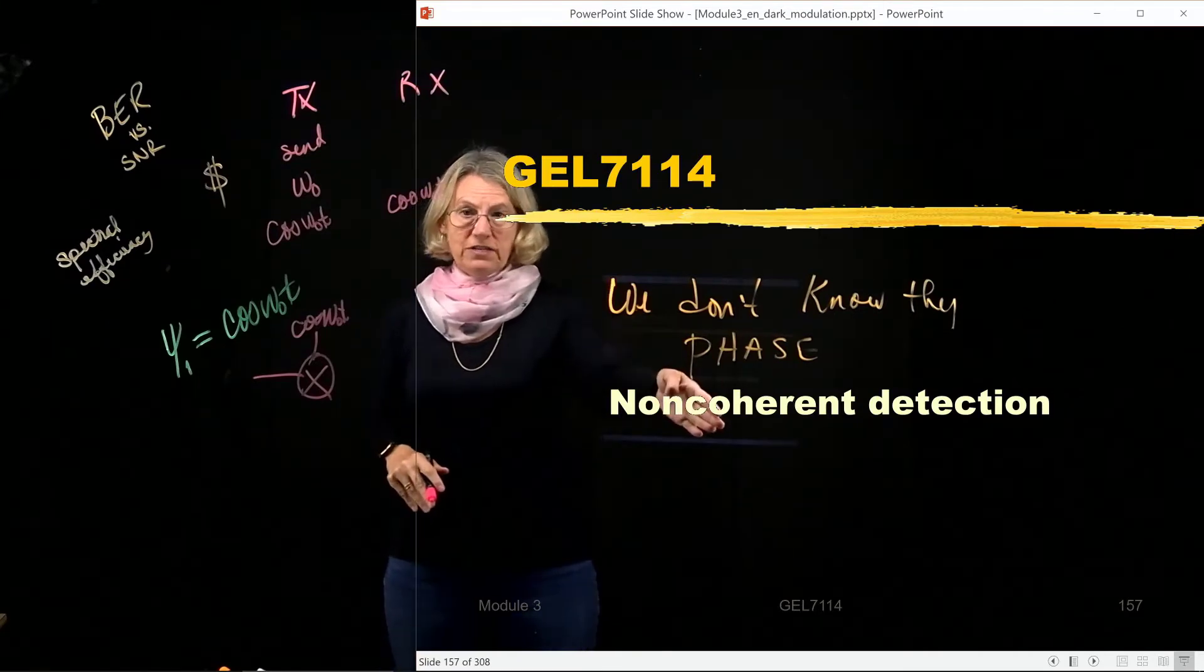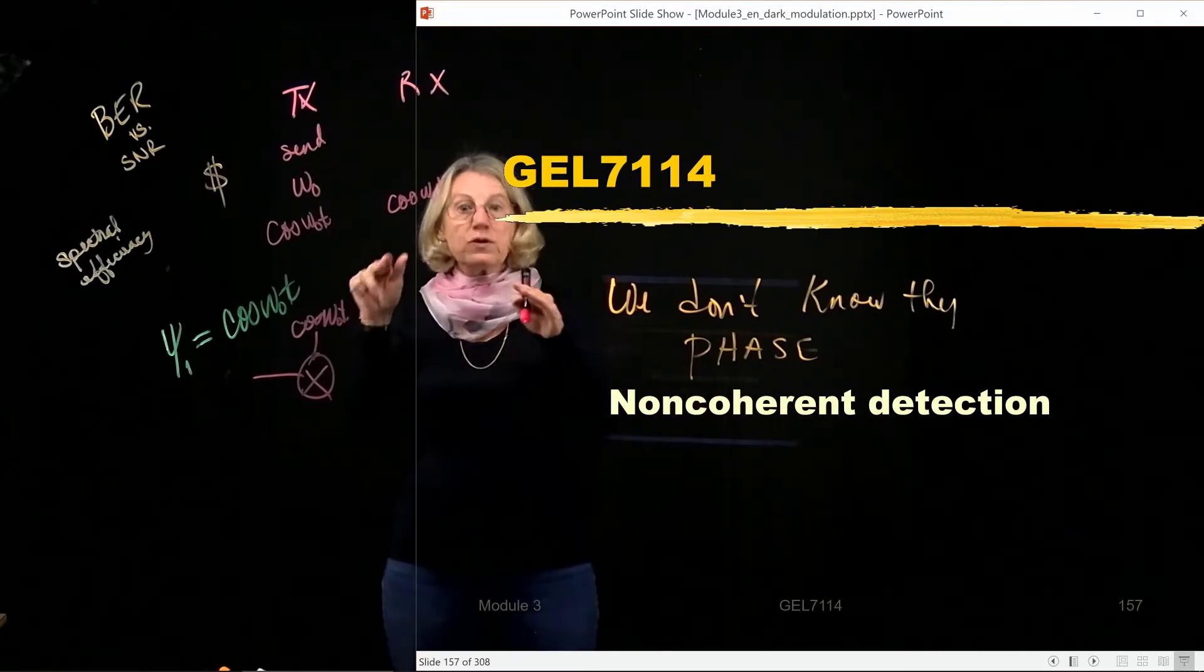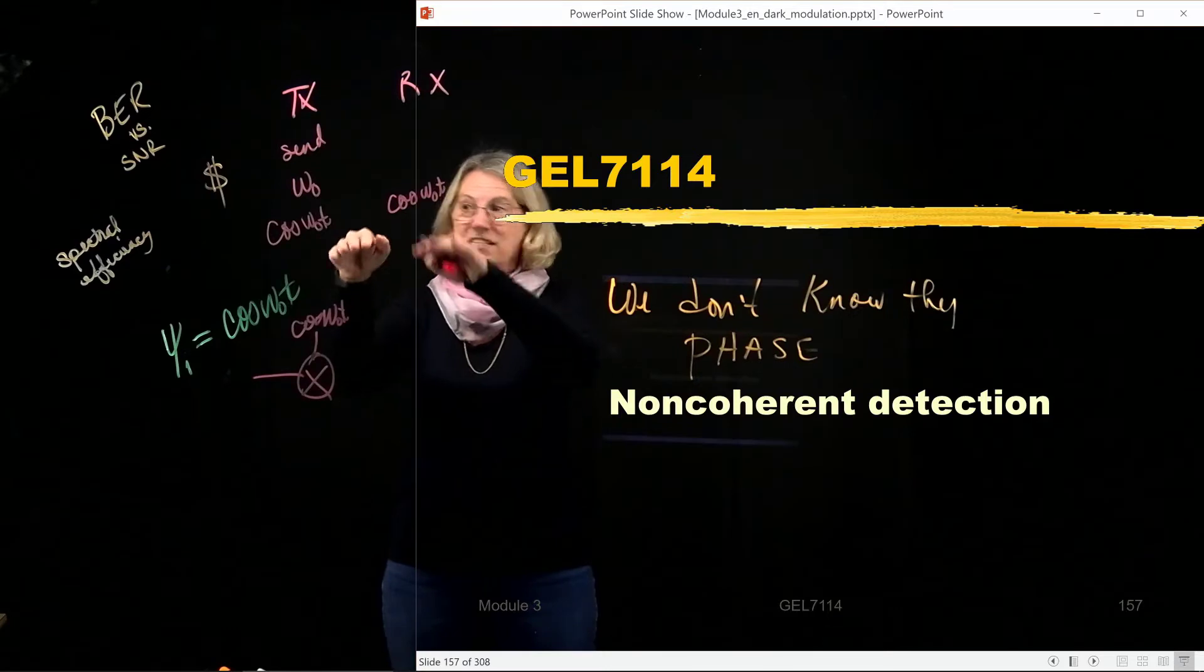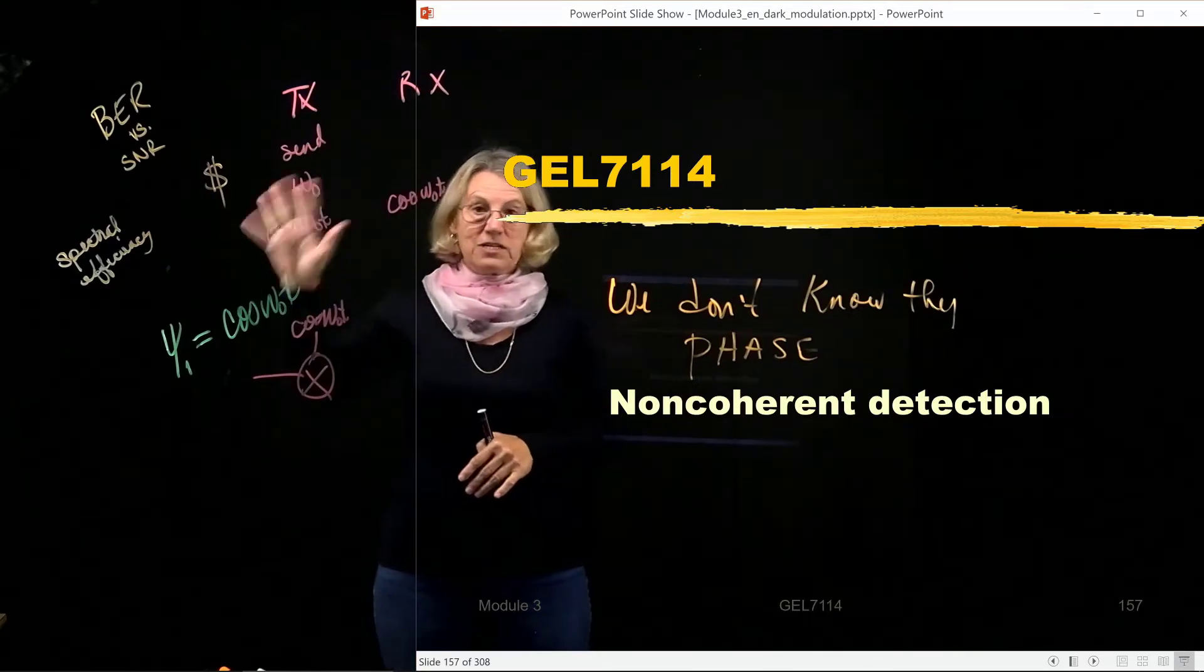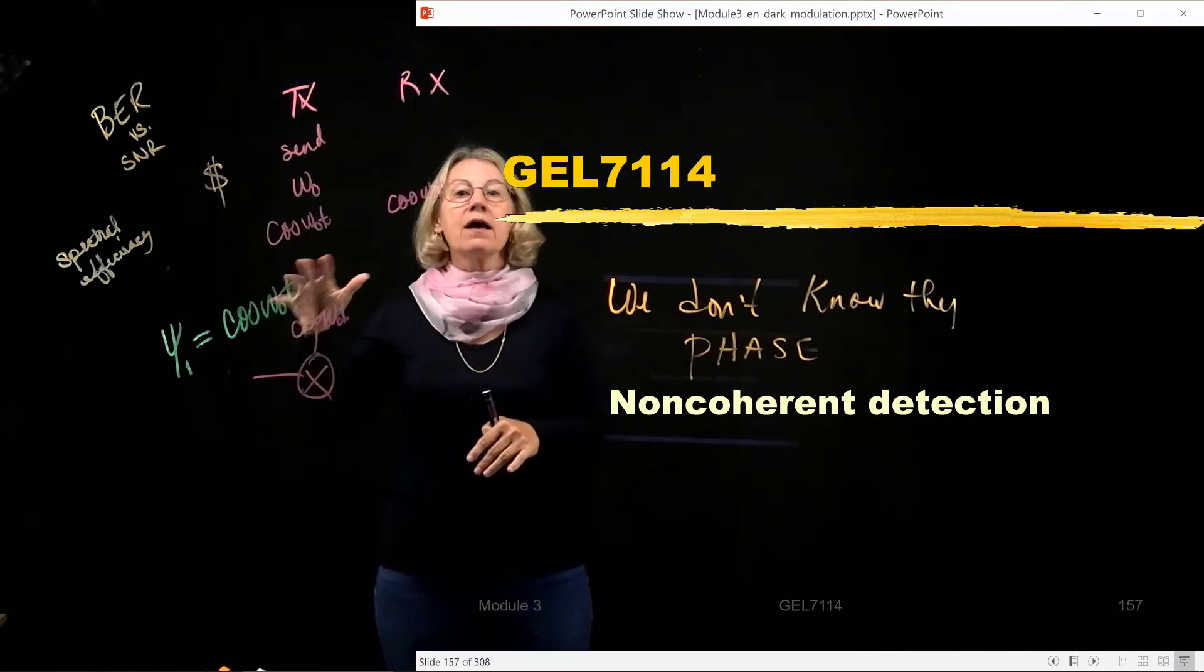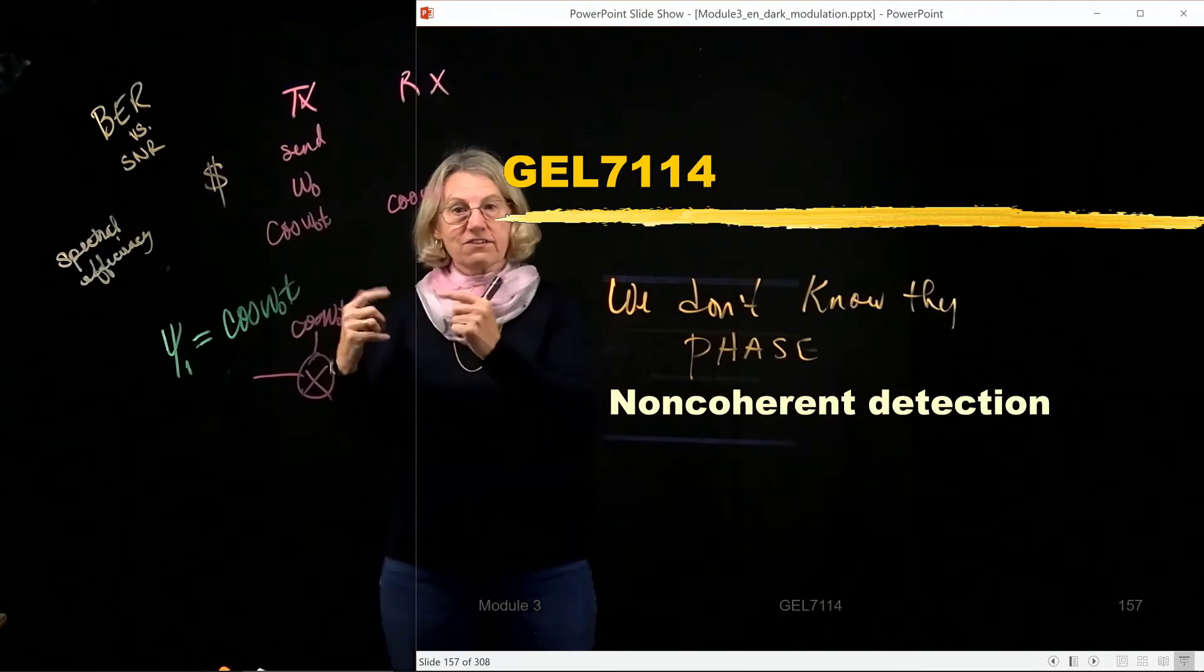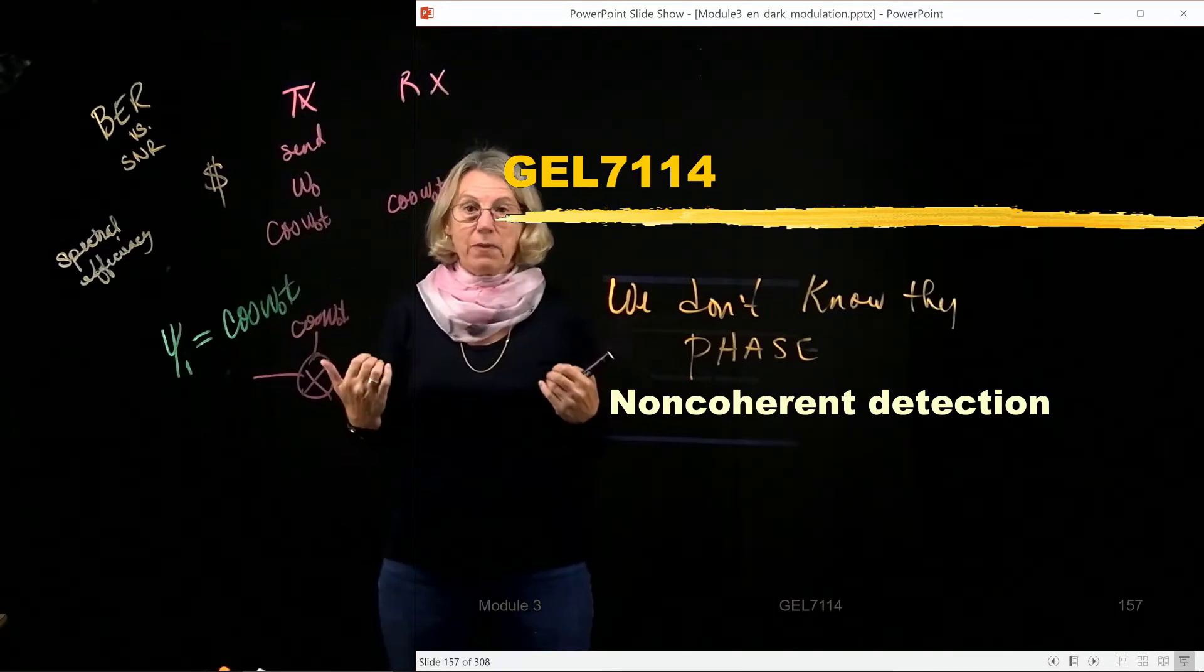Now, when I do non-coherent detection, I assume that that trick I used to track it, well, that cost me money. And I don't want to spend that money. I don't want to use a phase-locked loop to track the difference in phase between these two oscillators.